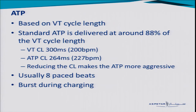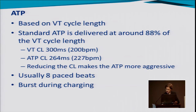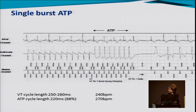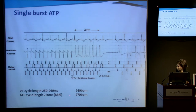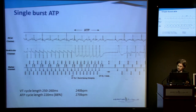Here you can see ATP in action: the patient goes into VT detected by the device, with a cycle length of 250 milliseconds — a VT rate of 240 beats per minute. ATP is delivered, eight paced beats at 270 beats per minute, which is 88% of the VT cycle length, and the cardioversion is successful — no need for a shock.